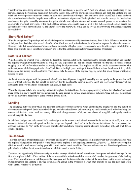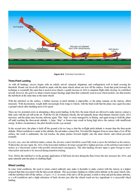There are two significantly different techniques used to manage tailwheel aircraft touchdowns: three-point and wheel landings. In the first, the airplane is held off the surface until the attitude needed to remain aloft matches the geometry of the landing gear, and when touchdown occurs, the main gear and the tailwheel make contact at the same time. In the second technique — wheel landings — the airplane is allowed to touchdown earlier in a lower pitch attitude so that the main gear touch while the tail remains off the runway. Three-Point Landing: success begins with an orderly arrival, with airspeed, alignment, and configuration well in hand crossing the threshold. Round-out and level-off should be made with the main wheels about one foot off the surface. The technique is essentially the same as in nosewheels — a gentle increase in AOA to maintain flight while slowing — but the goal in a tailwheel aircraft is to attain a much steeper fuselage angle so that the tailwheel touches at the same time as the main wheels. With the tailwheel on the surface, a further increase in pitch attitude is impossible, so the plane remains on the runway.